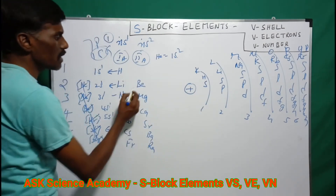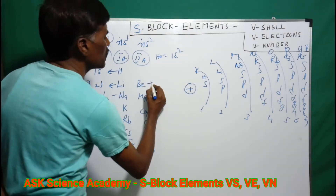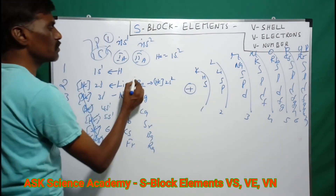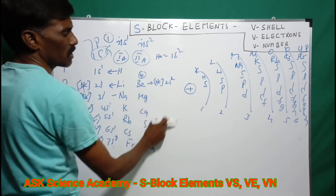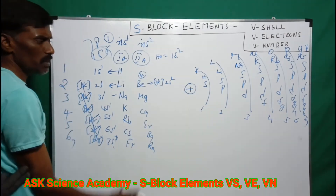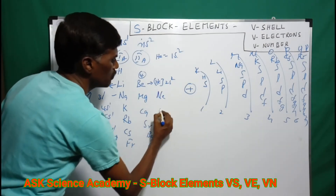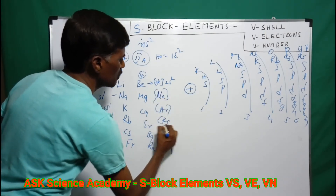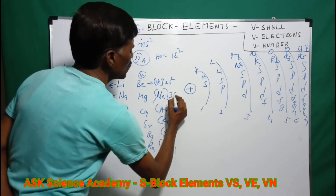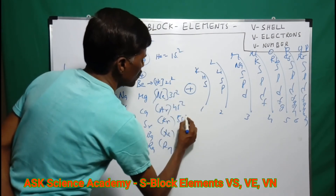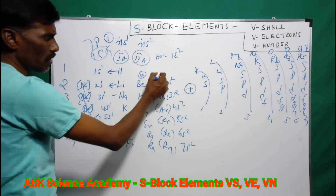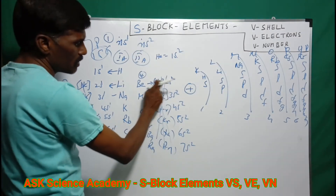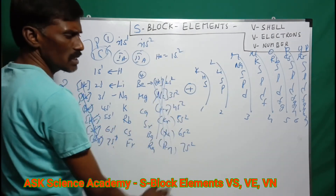The second group starts with Beryllium, whose configuration is 1s2 2s2. The core configuration is Helium, Neon, Argon, Krypton, Radon. After the core configuration: 2s2, 3s2, 4s2, 5s2, 6s2, 7s2 for Beryllium, Magnesium, Calcium, Strontium, Barium, and Radium respectively.